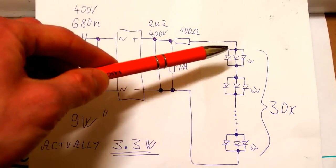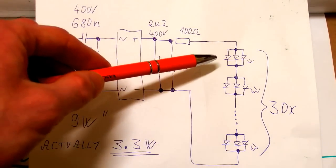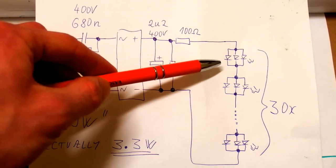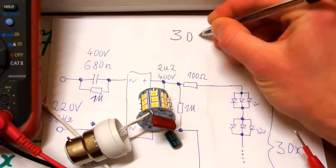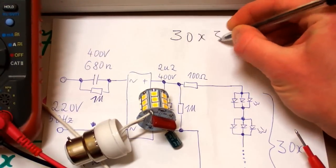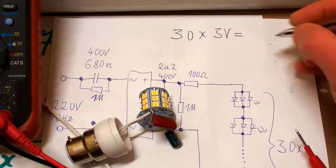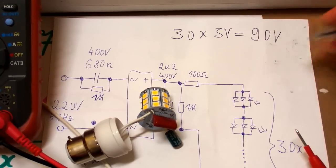There is 30 packages in series and each package contains 3 chips in parallel. There is 30 chips in series and each one is about 3 volts. So I guess the total voltage of the LEDs will be about 90 volts.